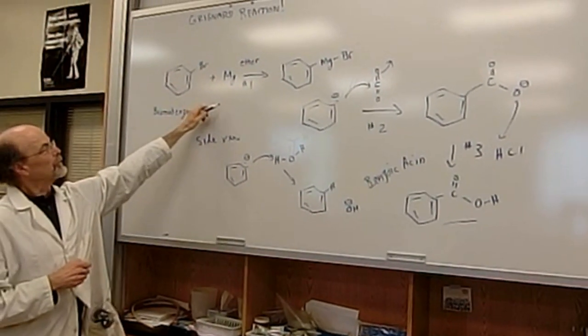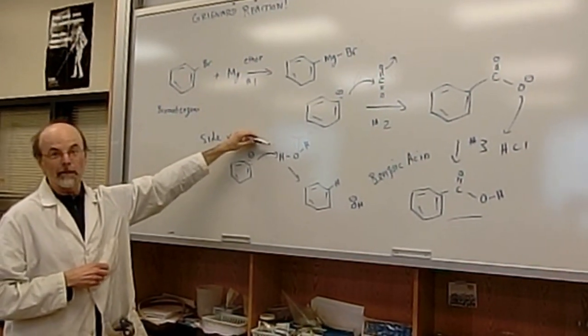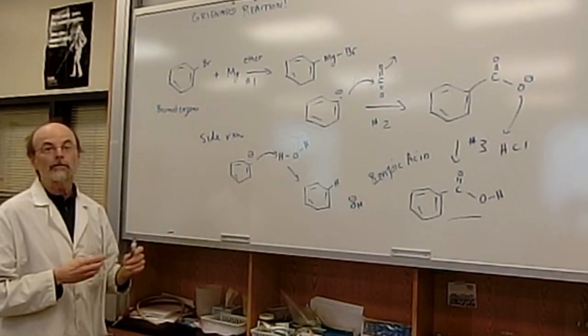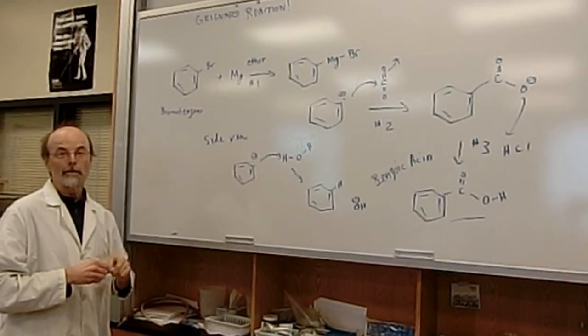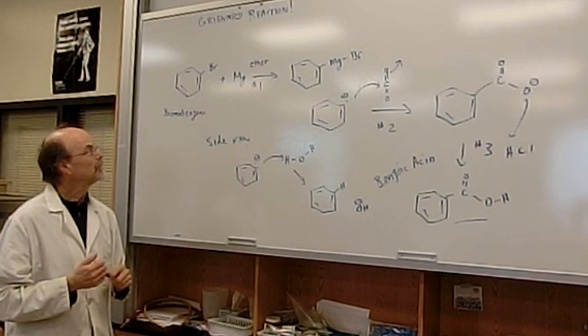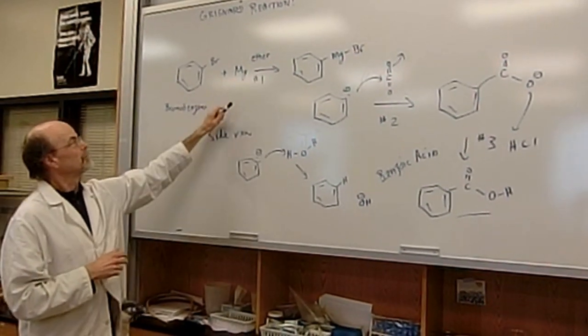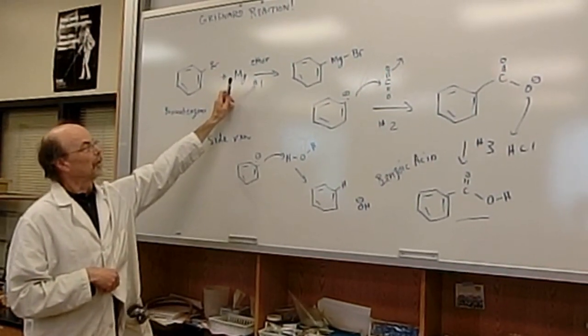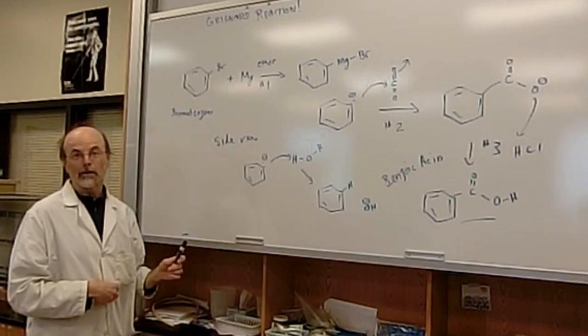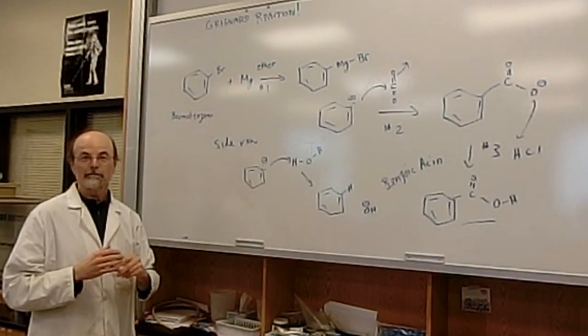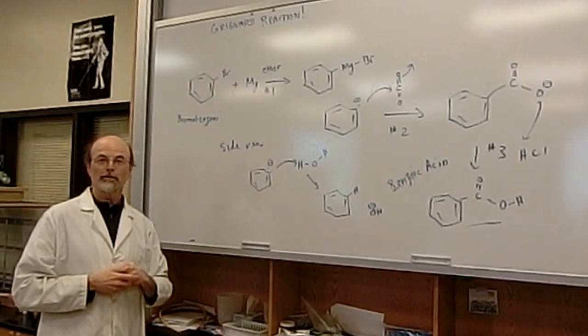So right off the bat, what we're going to do is to ensure that we don't have any water present. We're going to flame dry all the glassware we'll be using to make sure we dry all the water from the glass, and we also will be using very dry ether. Our reaction setup will have a drying tube on to prevent water from getting in the reaction. Right, so let's get to flame drying first off.